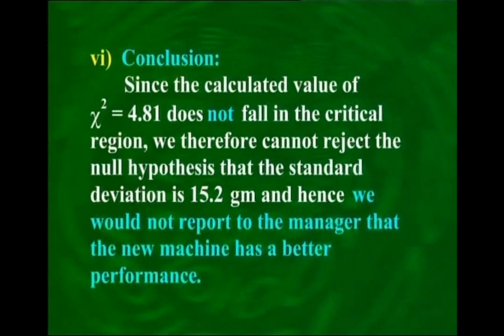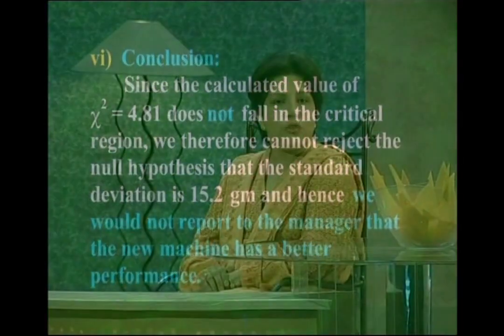In this problem, our computed value is 4.81, which does not fall in the critical region. Hence we would not report to the manager that the new machine has a better performance. Our alternative was that variability has reduced, but since we are accepting the null hypothesis — because our value fell in the acceptance region — our data does not support that claim.